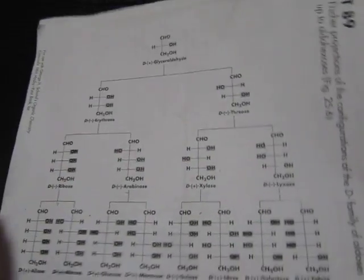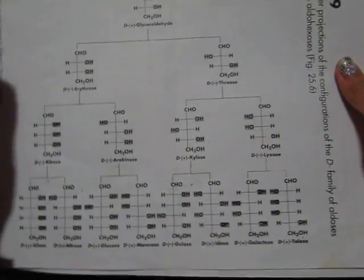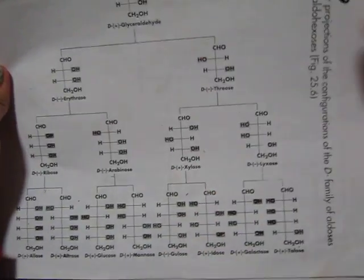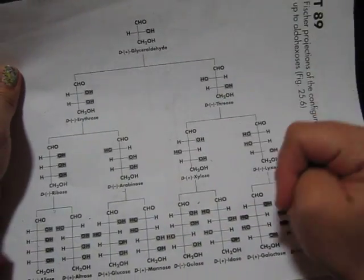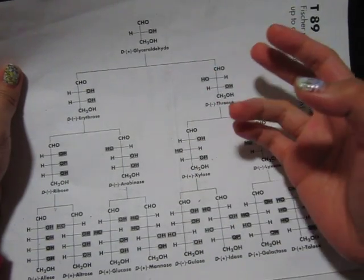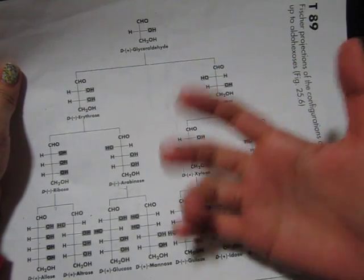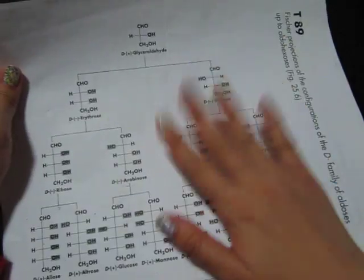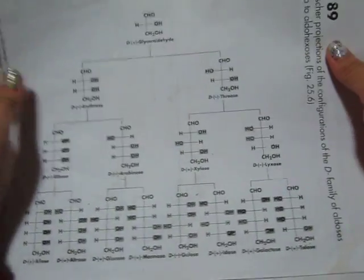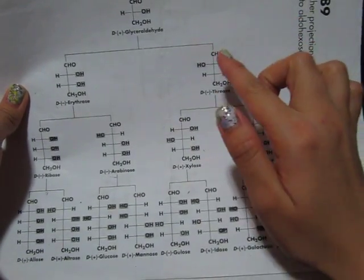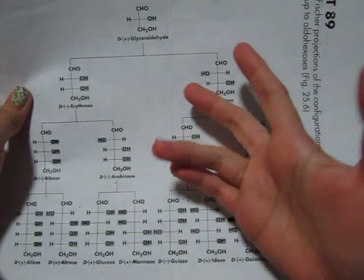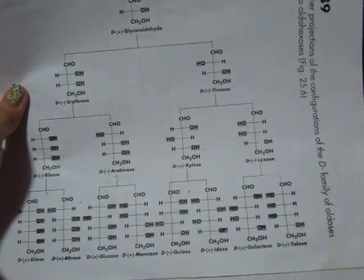If you're looking for a way to memorize this big chart here the easy way, then you're in the right spot. I'm just going to share with you how to memorize this easier, especially during an exam or if you just want to impress people. This chart is basically the aldoses up to the aldohexoses, which are monosaccharides in the D-family form.